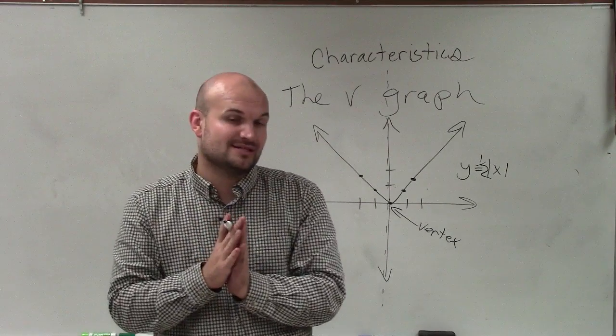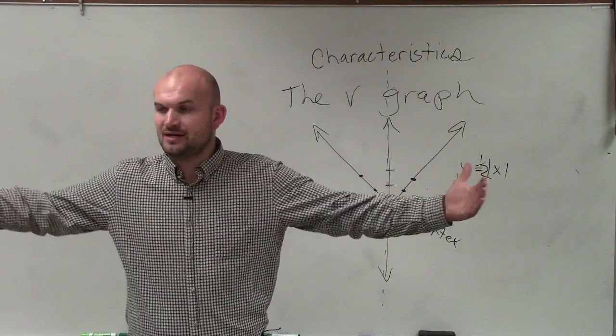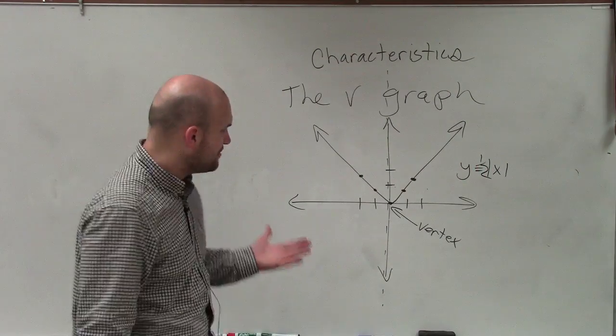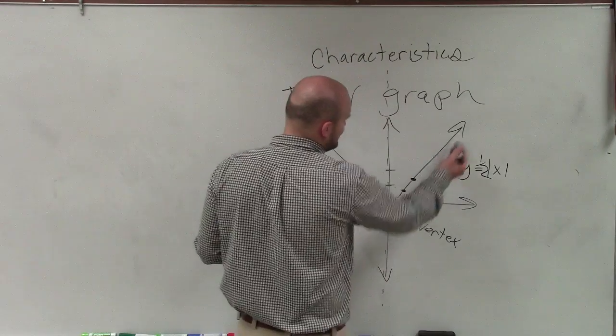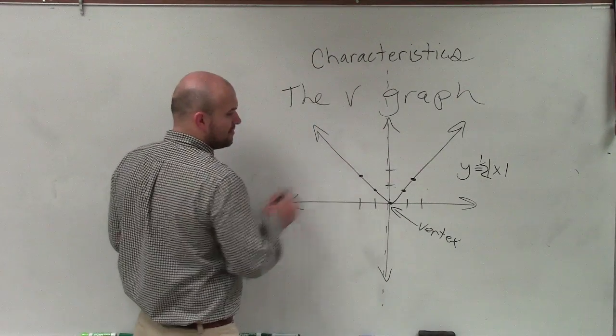And if it's less than 1 between 0 and 1, then it becomes much wider. So those are some very important things to understand. Think of these two lines as kind of like slopes coming off your vertex.